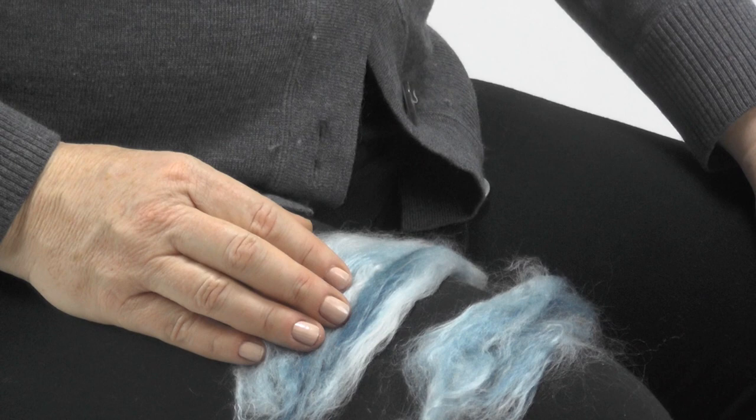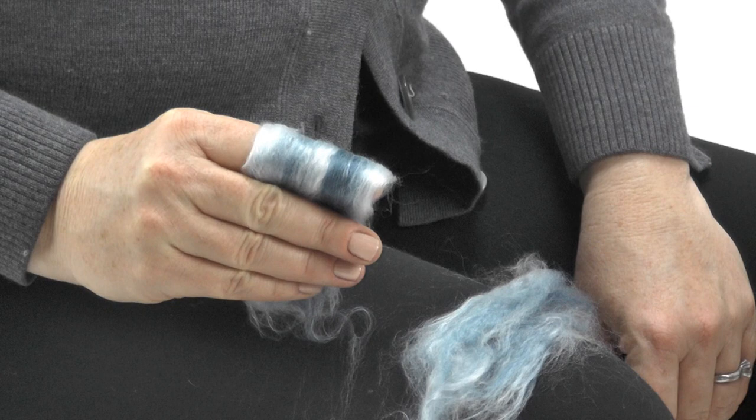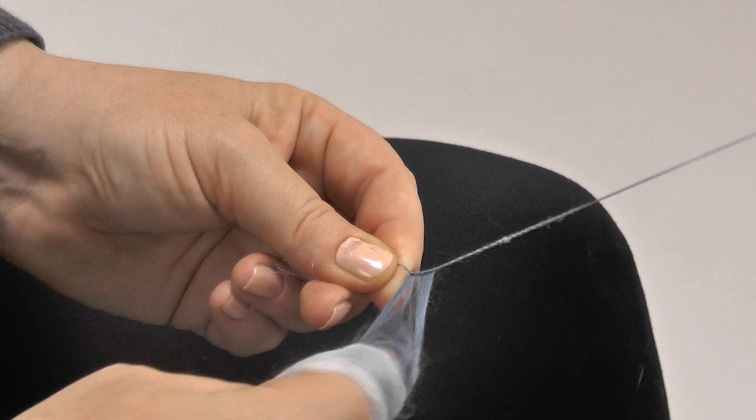Now fold one length over the index finger of your fiber hand. Connect the fiber to the leader. Your hands will remain in the same orientation while you spin.